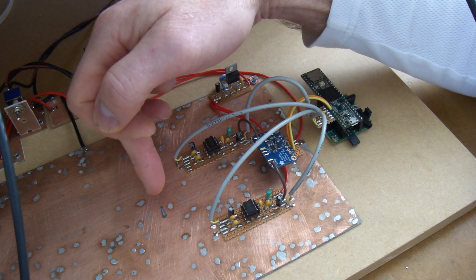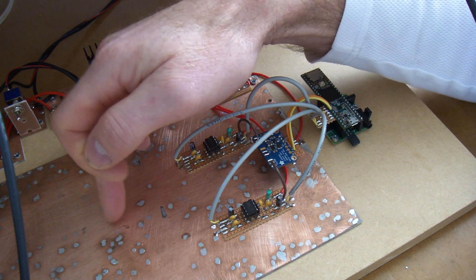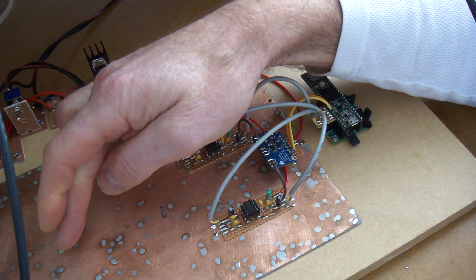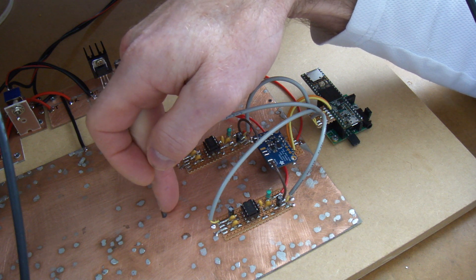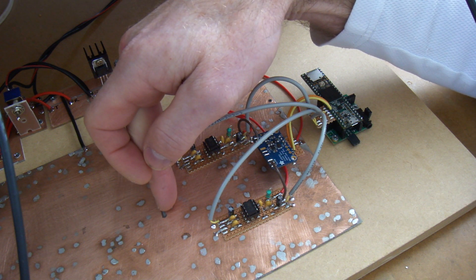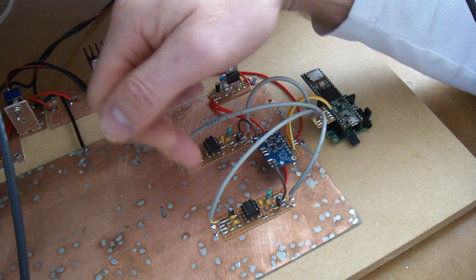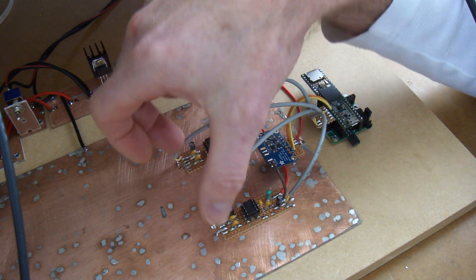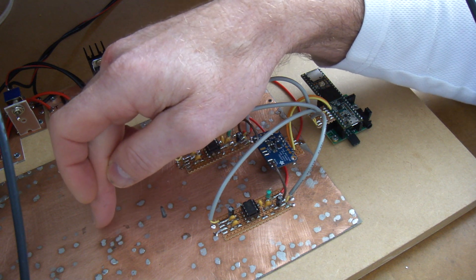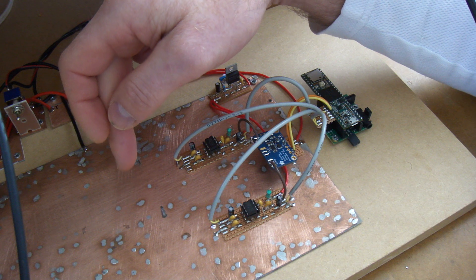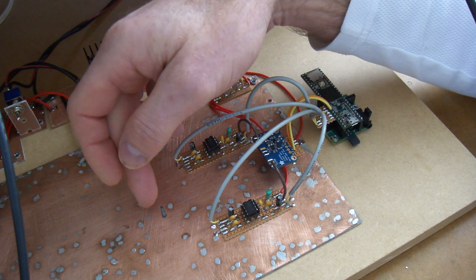Upstream of that splitter will be a bandpass filter which will be shared both on receive and transmit. So that RF splitter will serve two functions: it will split the RF into the two I&Q channels on receive, and on transmit it will combine the RF before sending it back through that bandpass filter to eventually go on to the power amplifier.